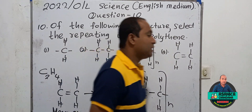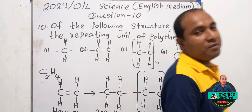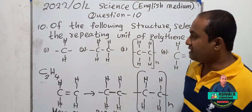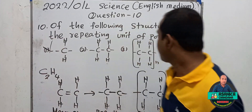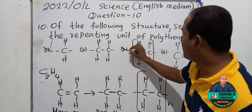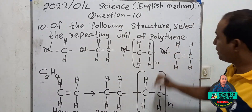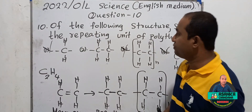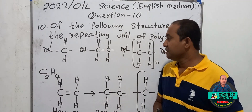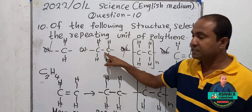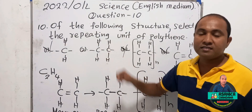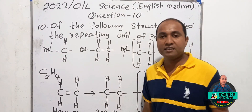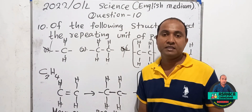You can select the most suitable answer among the given structures. Answer number one is wrong, answer number three is wrong, and answer number four is wrong. So the repeating unit of polythene is answer number two. We will now go to question number 11.